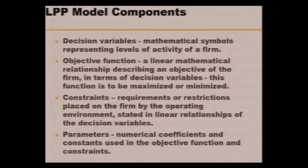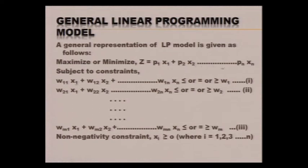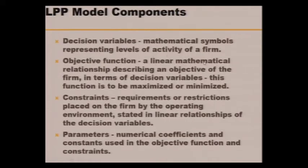The components of an LPP model include decision variables, denoted x1, x2, ..., xn. These are mathematical symbols representing the levels of activity of a firm. The objective function Z = p1·x1 + p2·x2 + ... + pn·xn is a linear mathematical relationship describing the objective of the firm in terms of decision variables. This function is to be maximized or minimized — maximized if it represents profit, minimized if it represents cost.